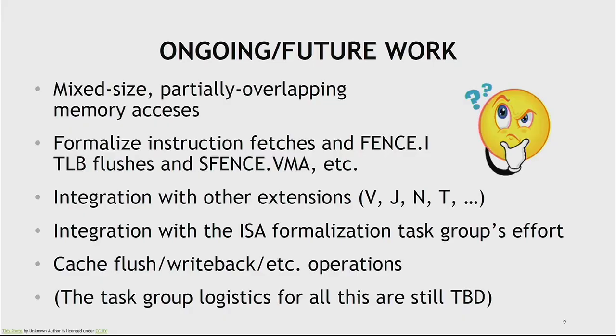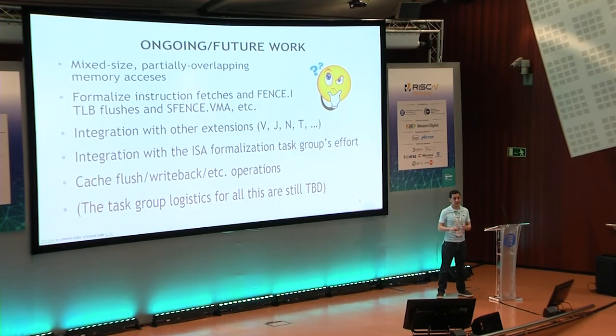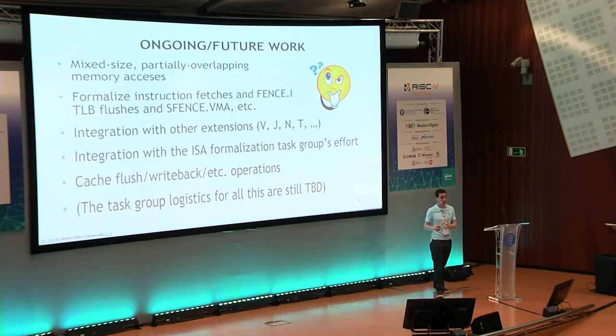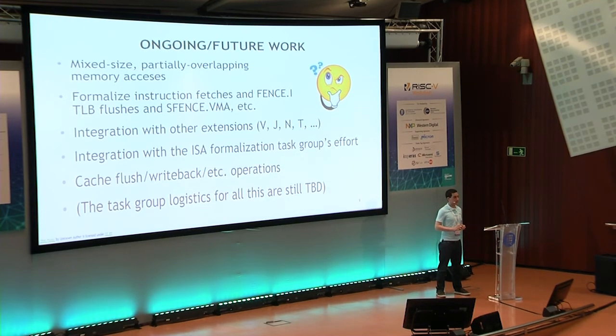There's a bunch of ongoing and future work. There's some hope to formalize things like fence.i and sfence.vma — exactly what that means. We want to integrate with all the other extensions that are coming online: things like cache flush and cache writeback instructions. These are future extensions that we intentionally chose not to try to address in this current ratification process. We wanted to converge around what was in the current memory model spec without getting bogged down in an indefinite amount of future details. The ratification is specifically focused on the pieces of the memory model I've talked about, and we'll work out the logistics for what's going to happen there as we move forward.